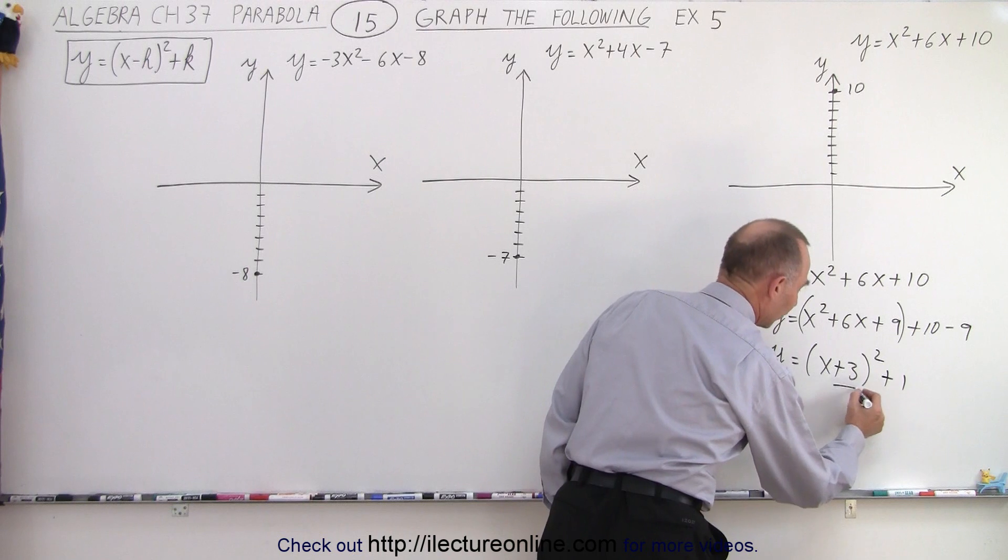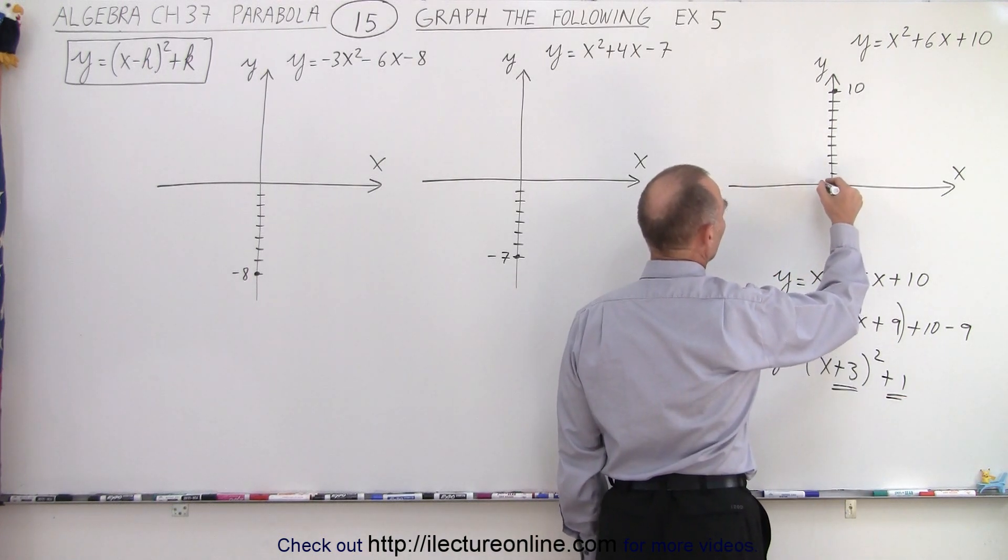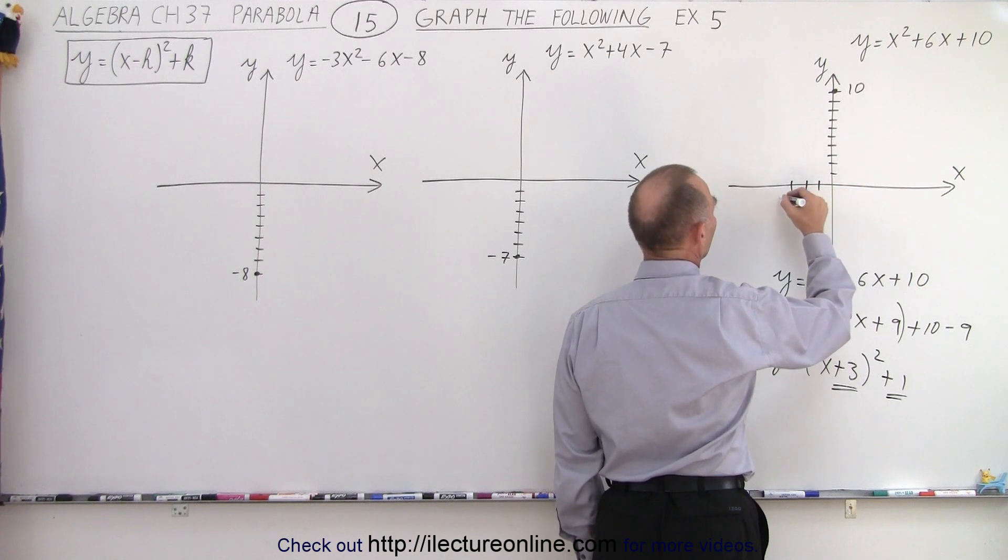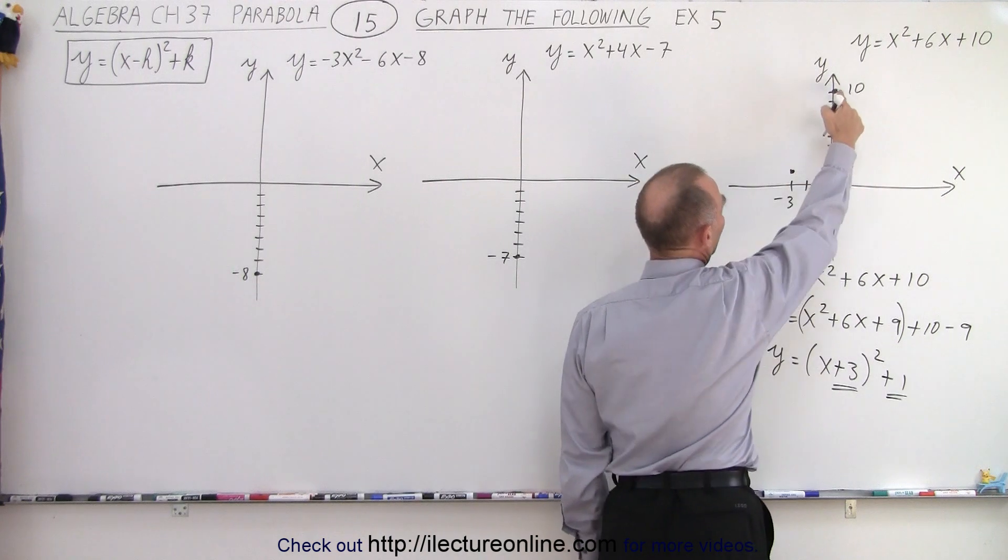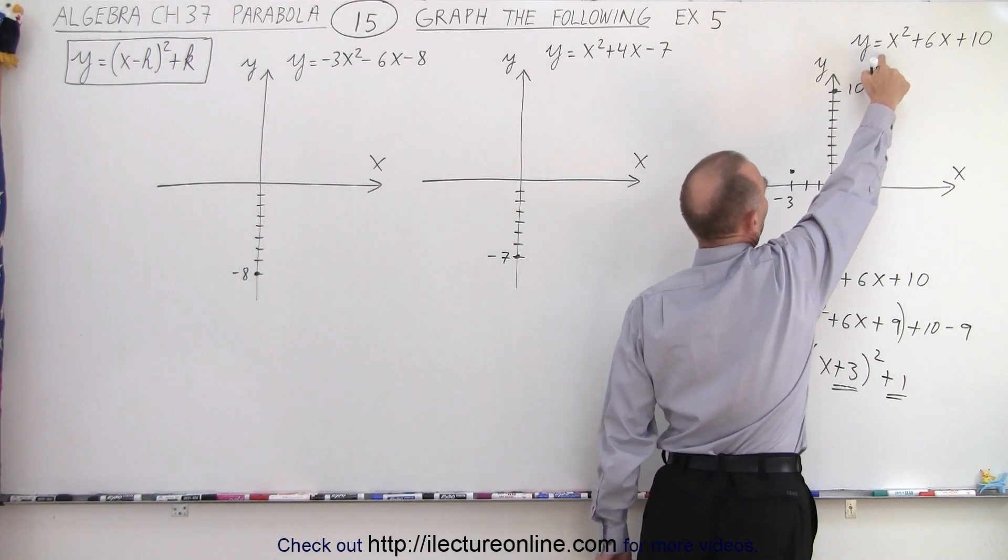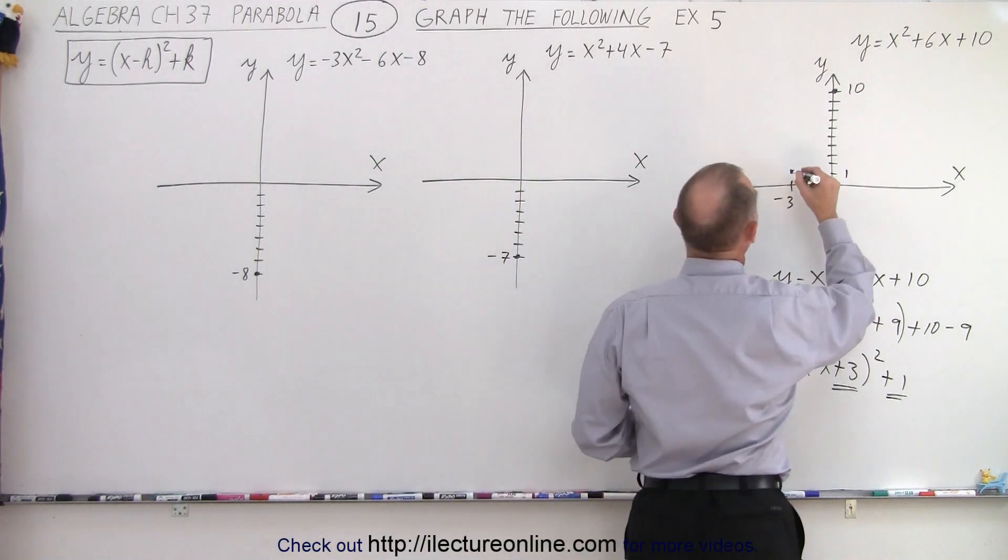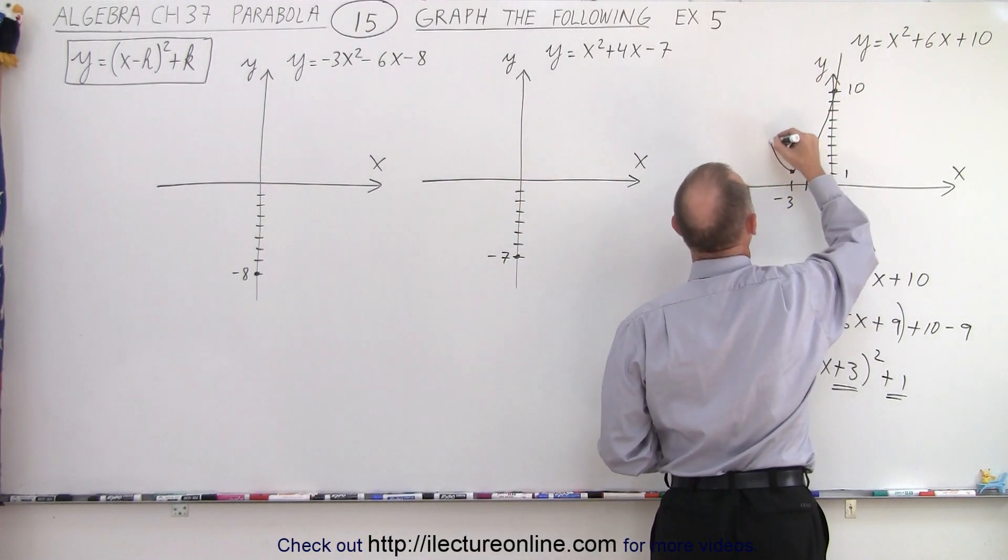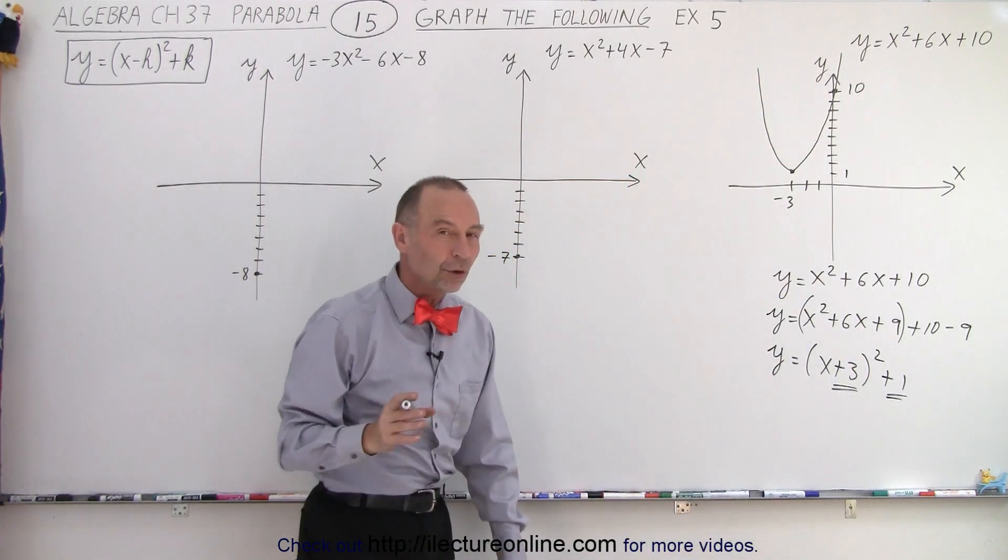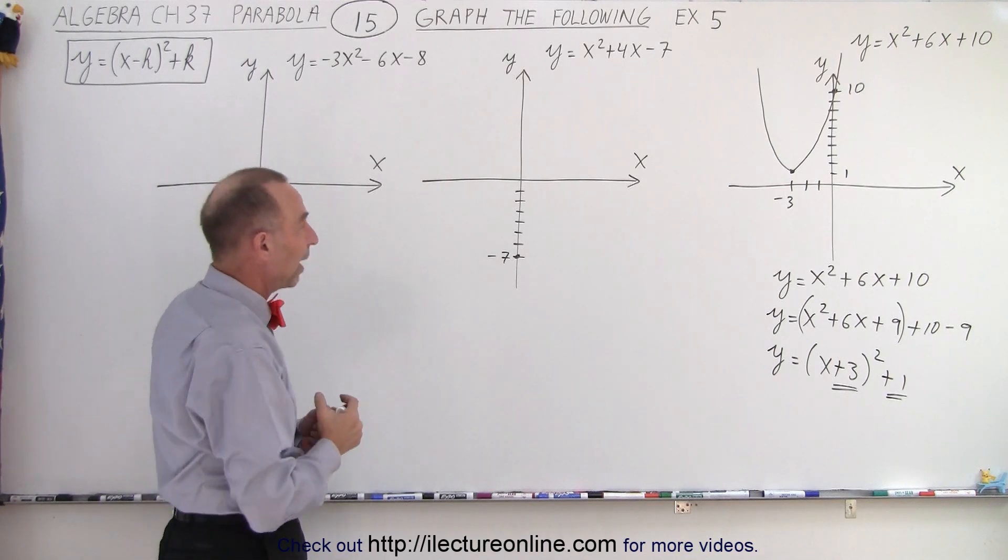And so this gives us the shift to the left of 3 and up 1. So left 3, 1, 2, 3, up 1. So that means the vertex is over here. We know that it crosses through that point, and we also know that the parabola opens upward because we have a positive x squared. That means our parabola will look like this and the mirror image over here. So knowing the y-intercept helps you draw a slightly more accurate graph.